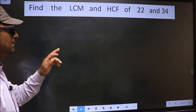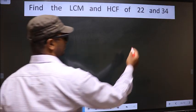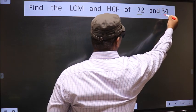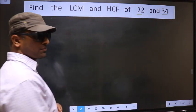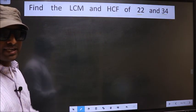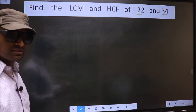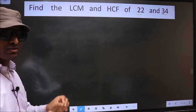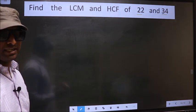Find the LCM and HCF of 22 and 34. To find the HCF and LCM, first we should do the prime factorization of each number separately.